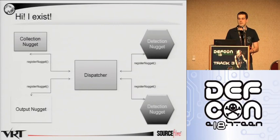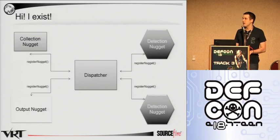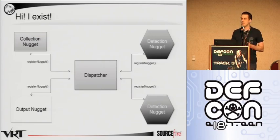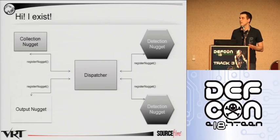And once it has successfully added each of the different nuggets to the routing table, it sends them back a unique identifier — a nugget ID — which they can then use in all future communications with that dispatcher.